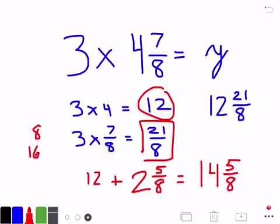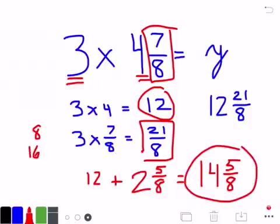Remember: multiply the whole number by the whole number, multiply the whole number by the fraction, then add those two totals together, and you'll end up with your ultimate final answer. Feel free to watch the video again, review some others. Perhaps even make your own — you can post it on Seesaw — and that will help you and help people in our class figure out how to multiply a fraction by a whole number or a mixed number.